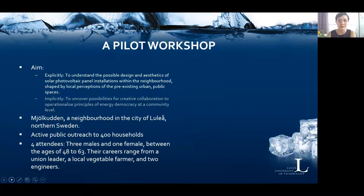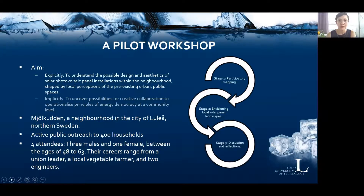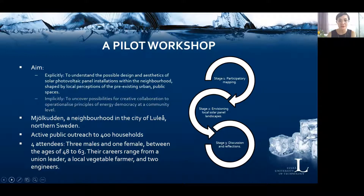The pilot workshop had three stages. Stage one was participatory mapping and understanding the lived experiences of the local urban public spaces in the eyes of the inhabitants who roam the area. Stage two, envisioning local panel landscapes, was formulated by combining innovative design solutions for solar-voltaic panels with the understanding of solar accessibility from an urban morphological level. Stage three is the discussion and reflection stage facilitated by a backcasting exercise.